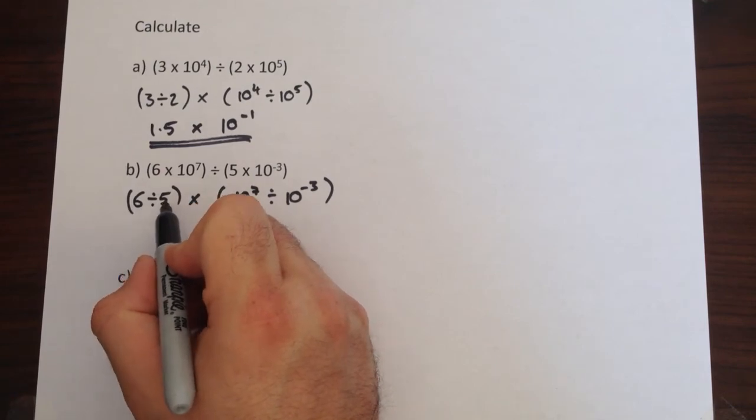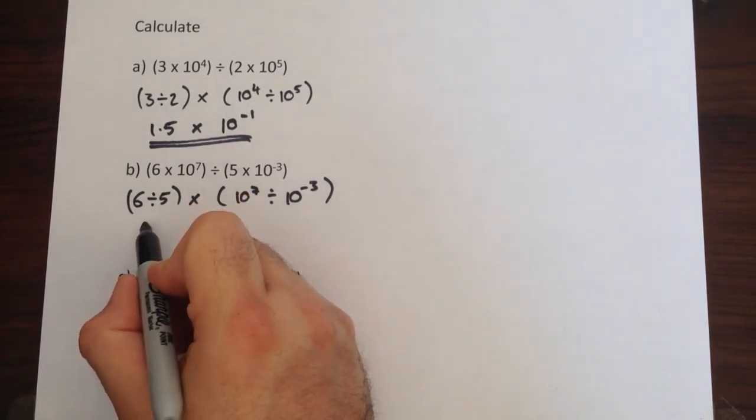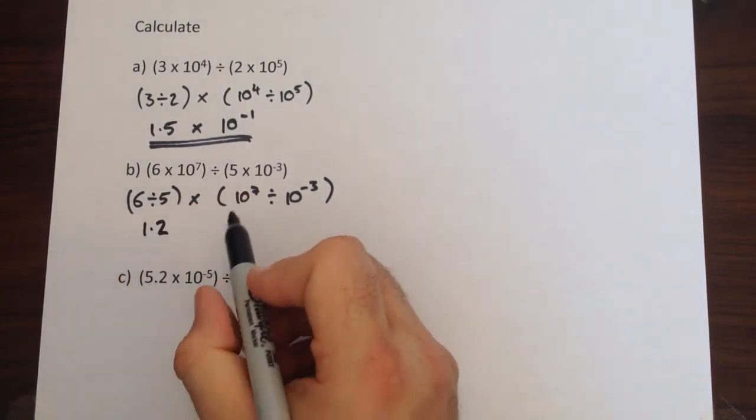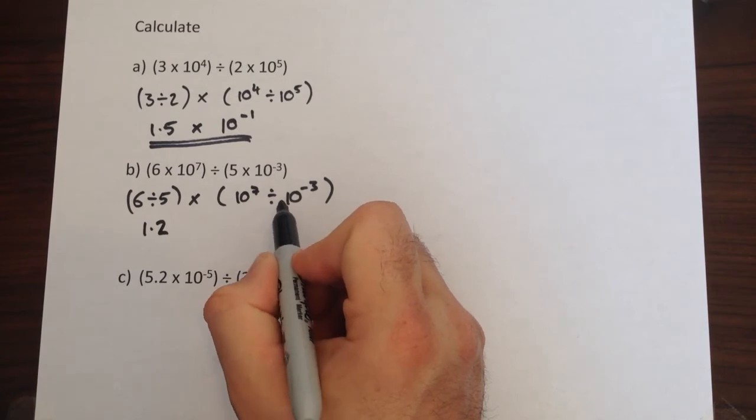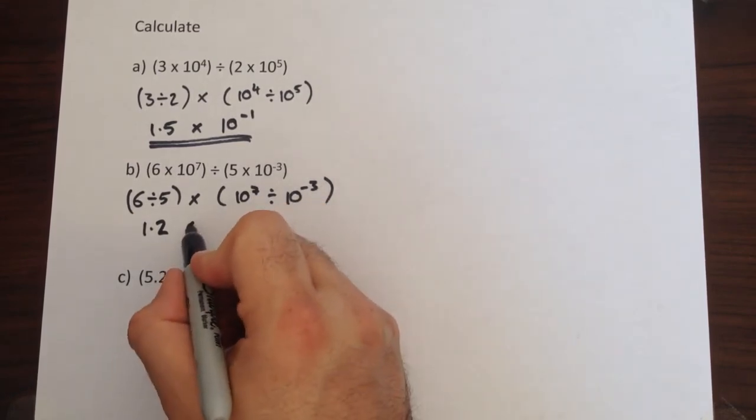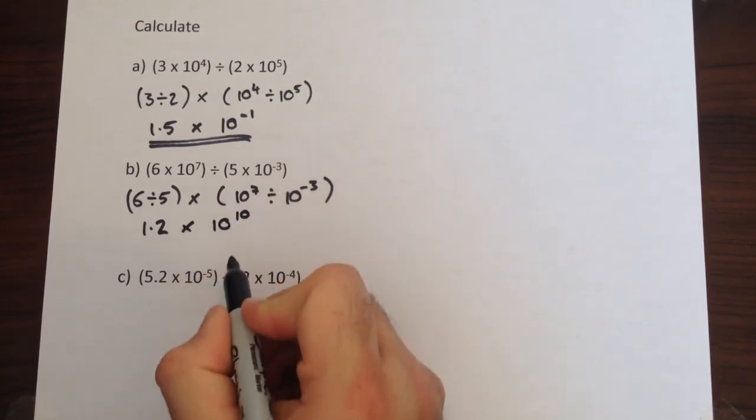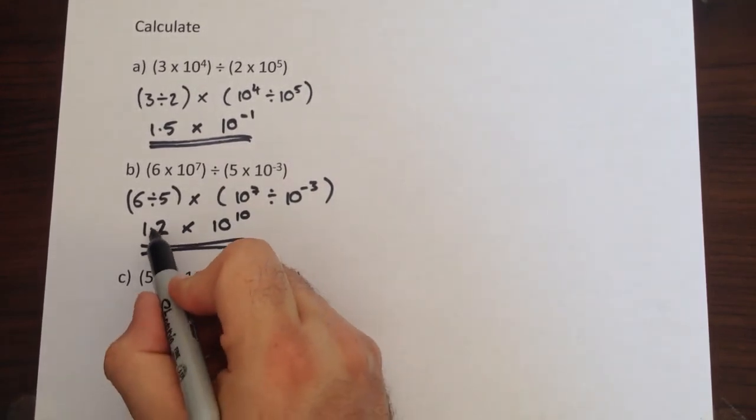The other way you could do it is you could divide by 10, 6 divided by 10 is 0.6, and then double it to correct for that, so 6 divided by 5 is 1.2. 10 to the 7 divided by 10 to the negative 3, you subtract the powers. Subtracting a negative number makes it bigger, so 7 take away negative 3 is the same as doing 7 plus 3, which would be 10. So the answer there is 1.2 times 10 to the 10, and no need to adjust the original number because it's still less than 10.